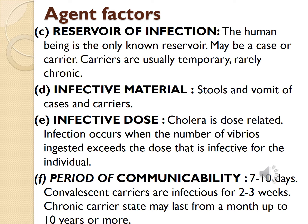People with immunocompromised conditions and children are at greater risk of death. Carriers are usually temporary and sometimes chronic. Carriers contribute importantly to the reservoir of infection; however, carriers shed fewer vibrios than clinical cases. The infective material is the stool and vomit of cases and carriers. Infection occurs when the number of vibrios ingested exceeds the effective dose for that particular individual.